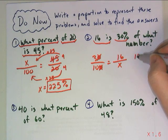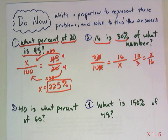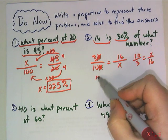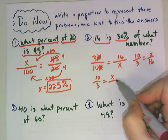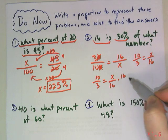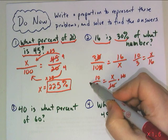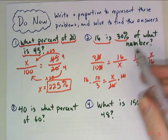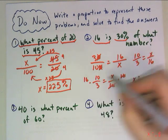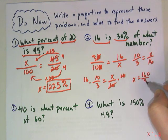First, flipping it over so that my variable is at the top. Then multiplying both sides by that denominator underneath the variable so that I can undo that. When I do that, x is 160 over 3.